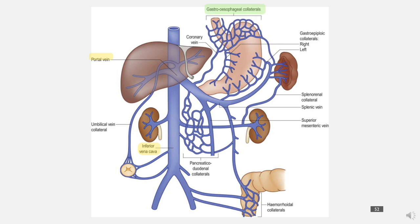This diagram illustrates some of those collaterals. The first shown is where the varices would be — the gastric vein and the azygous vein up here have formed collaterals. The next is hemorrhoids: the superior, middle, and inferior rectal veins are connected by collaterals. When blood is diverted under higher pressure in the portal circulation, that pressure comes back down onto the superior rectal veins, increasing pressure there and resulting in hemorrhoids.